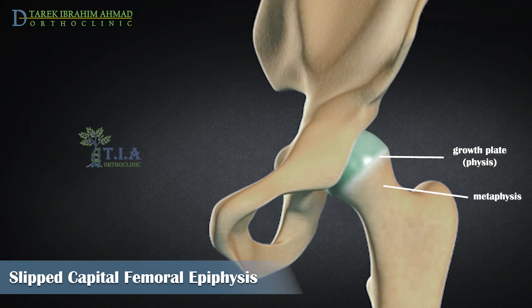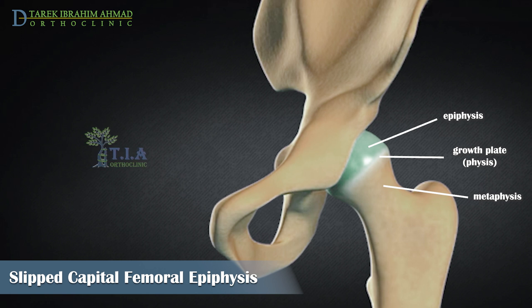Growth plates are located between the widened part of the shaft of the bone and the end of the bone. The epiphysis at the upper end of the femur is the growth center that eventually becomes the femoral head.